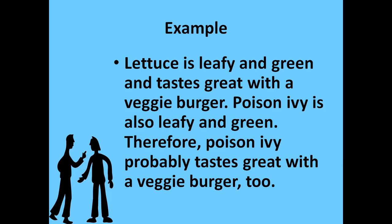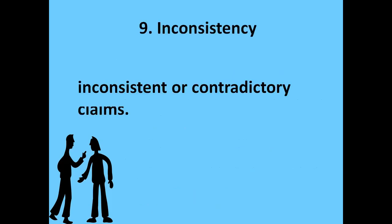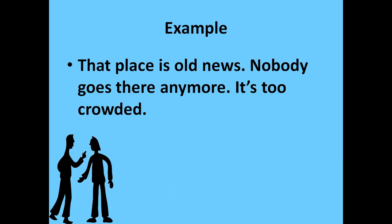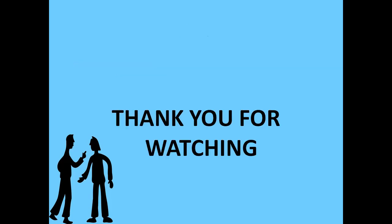The last fallacy is inconsistency — when an arguer asserts inconsistent or contradictory claims. For example: 'That place is old news. Nobody goes there anymore. It's too crowded.' In the first sentence the speaker says nobody goes there anymore, but then says it's too crowded. If nobody is going there, how can it be too crowded? The argument is based on contradiction, which leads to the fallacy of inconsistency. I hope you understood the whole lecture — thank you for watching.